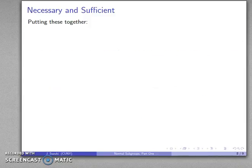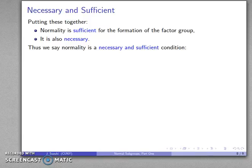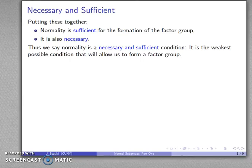If I put that together, what that tells us is that normality is enough for the formation of factor groups. It's also necessary, and we say that normality is a necessary and sufficient condition. It is the weakest possible condition that will allow us to form a factor group.